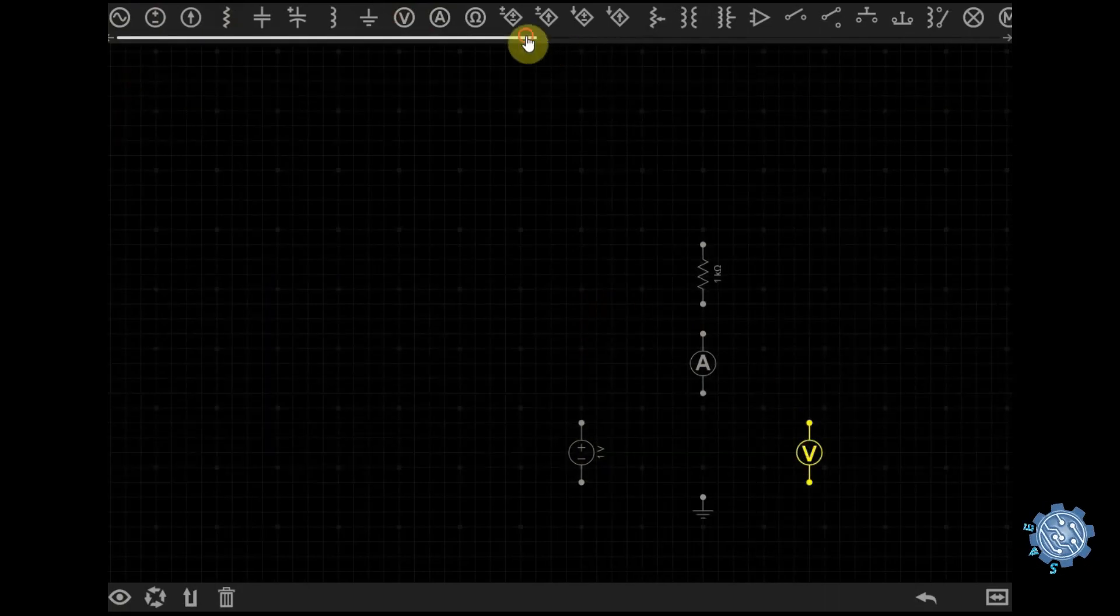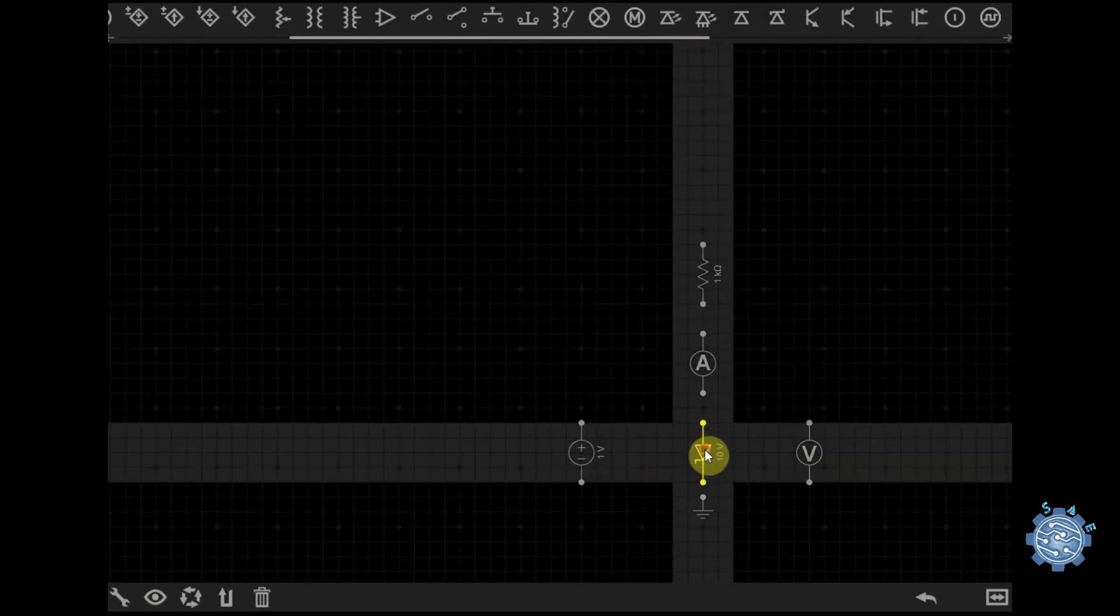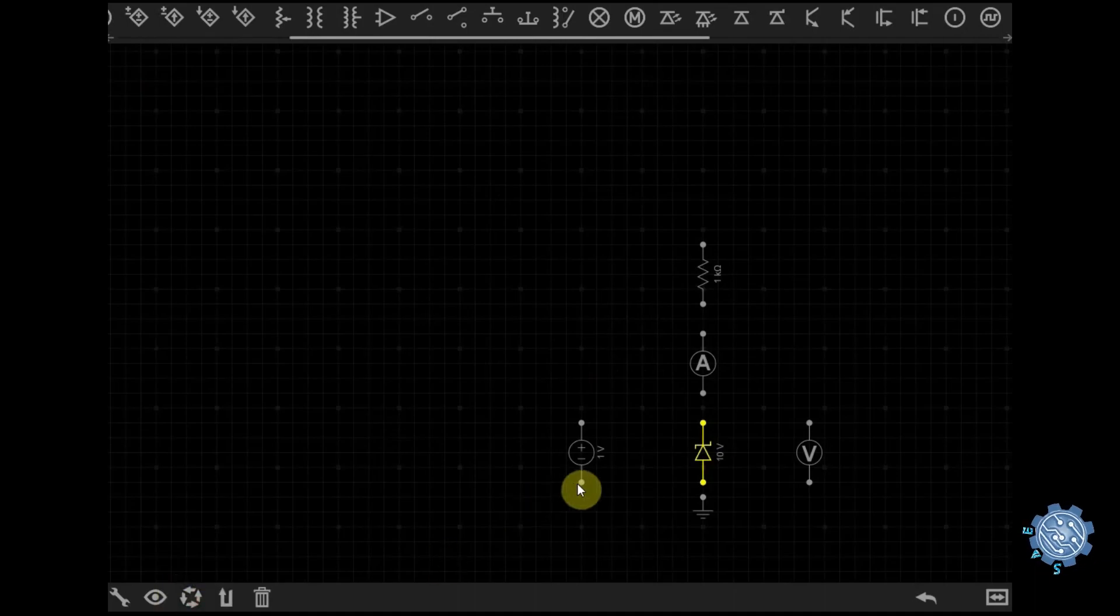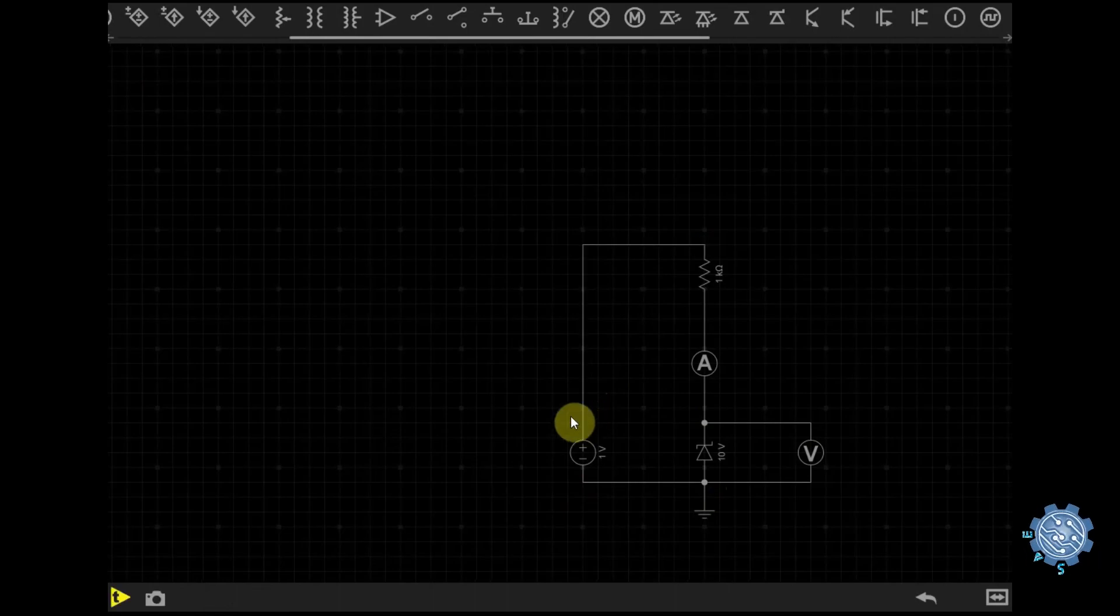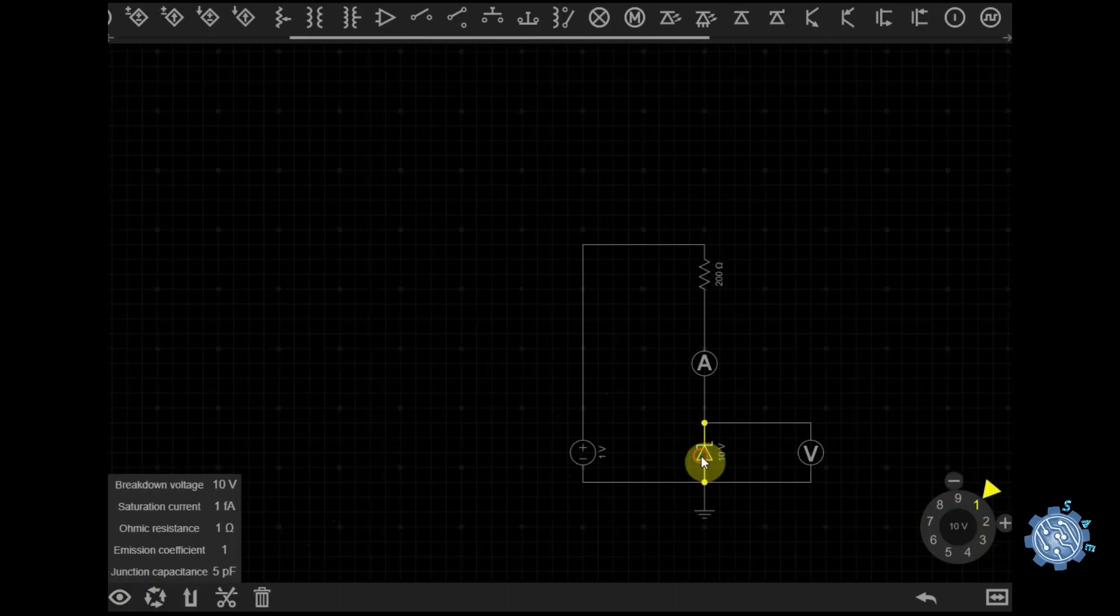Power dissipation. The reverse leakage current contributes to the power dissipation of the Zener diode, which is the amount of power that it dissipated as heat when the diode is in operation. In applications where power dissipation is a concern, such as high power voltage regulators, it's important to choose a Zener diode with a low reverse leakage current to minimize power dissipation and reduce the risk of overheating.